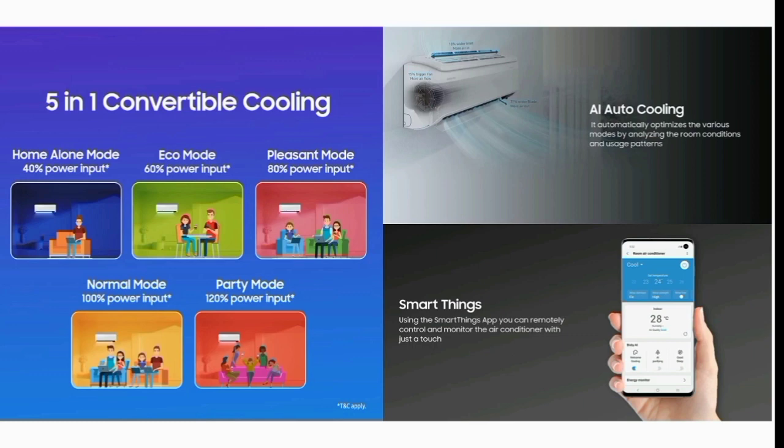The third option is present mode. You can choose the present mode where the AC runs at 80%, saving the remaining 20% power. The fourth option is normal mode. If you choose the normal mode, the AC runs at 100%.